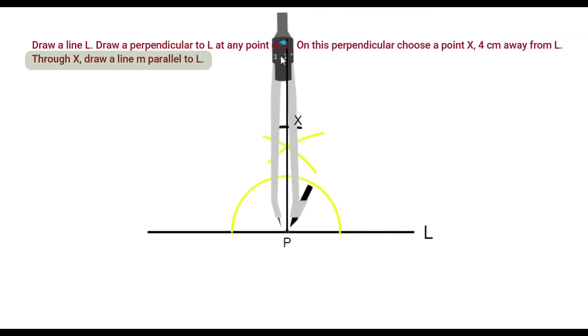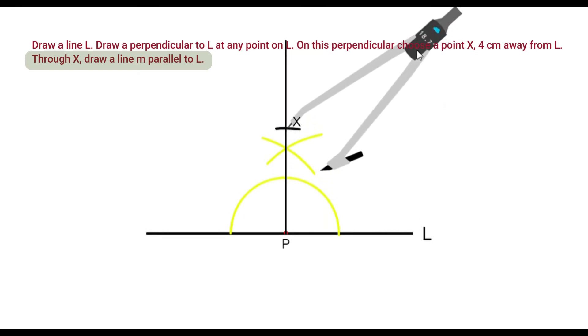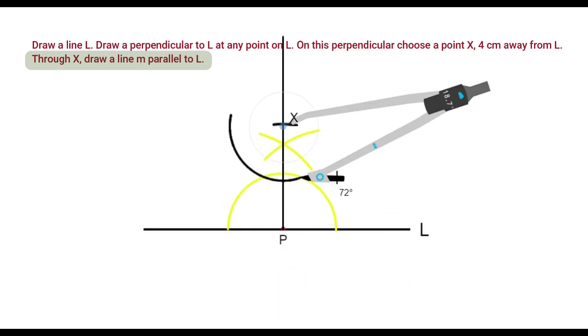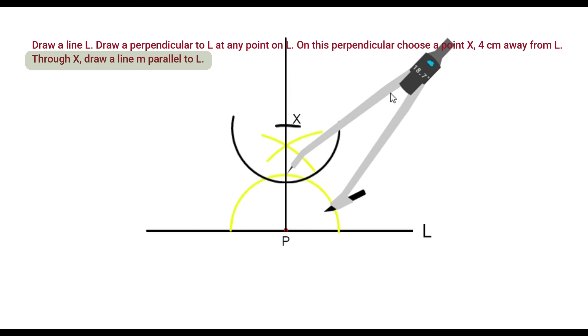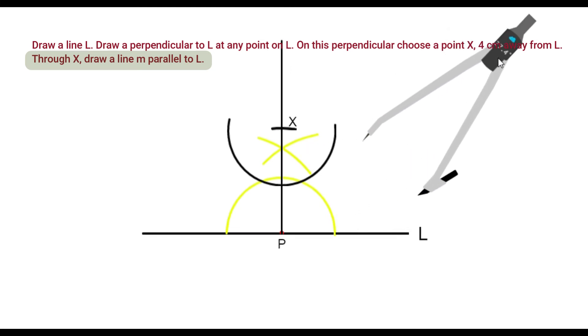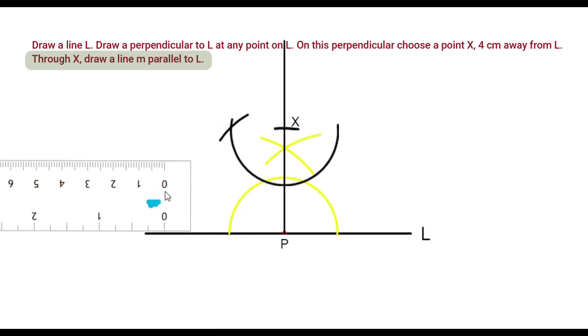Place compass at P and measure the radius. With the same radius, draw an arc on X. Now, measure the length of this arc. And, with the same length, draw an arc here. Now, join the intersecting point and X to draw a line M.